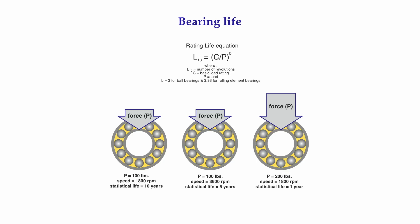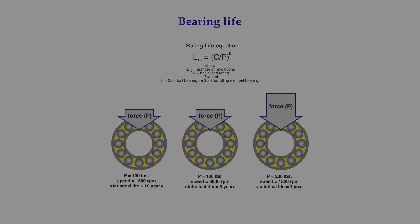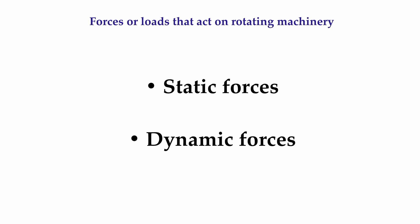If our goal is to increase the operating lifespan of our rotating machinery, then it seems logical to conclude that the most effective way to do that is to reduce the forces on our bearings. There are two basic types of forces that act on our rotating machinery: static forces and dynamic forces. Static forces act in one direction only; dynamic forces change their direction or vary in intensity on either a periodic or a random basis.